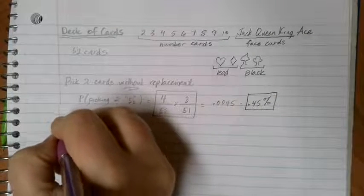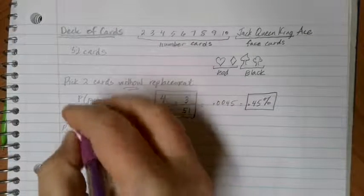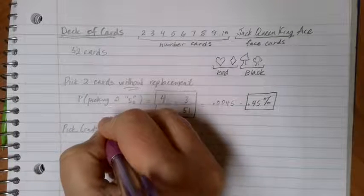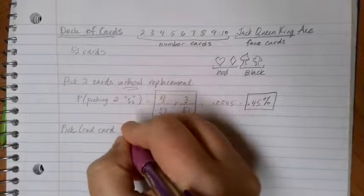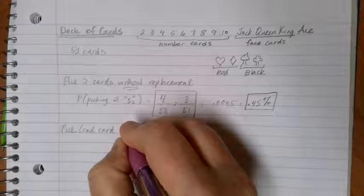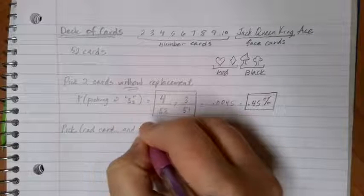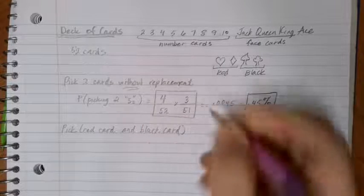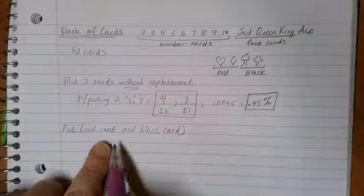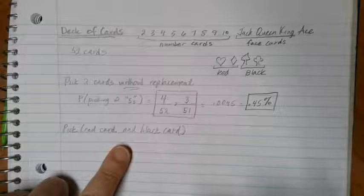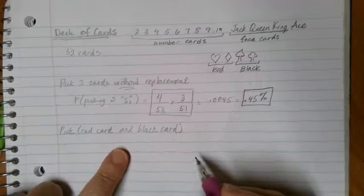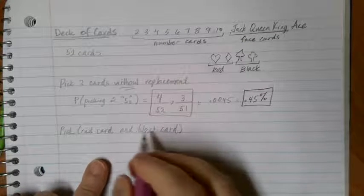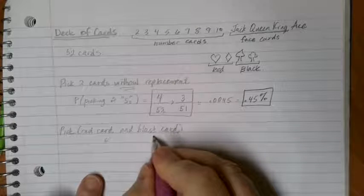Let's suppose that I want to pick a red card and a black card and figure out what the probability of that happening is. Well, in this case, if I want to end up with a red card and a black card in my hand, I don't really care which one gets picked first.